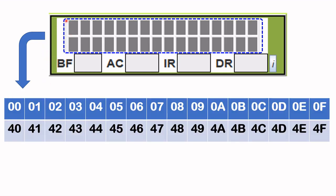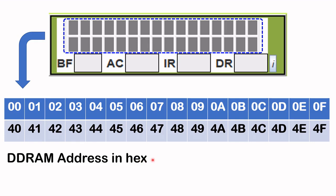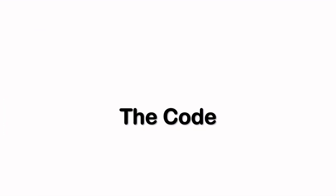This first character has a unique address of 0x00. These numbers you see are all the hex addresses of each character on the LCD module. The next character has address 0x01, the one after is 0x02, and so on. On the second line, the first character has an address of 0x40, the next is 0x41, then 0x42, and so on.